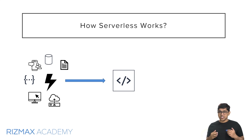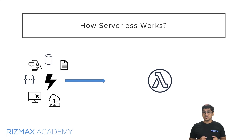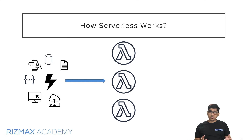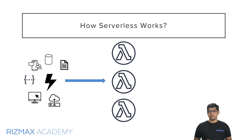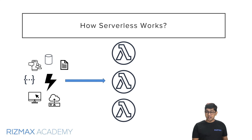In more technical terms, serverless functions often run in docker-like containers, and several instances of these functions can run concurrently, making them highly scalable. If you're new to terms like docker or container, don't worry — you don't need to know about these to build serverless applications. All the containerization happens behind the scenes and is completely taken care of by the cloud provider — in our case, AWS.